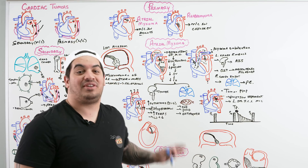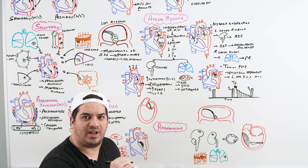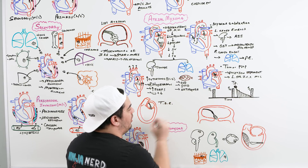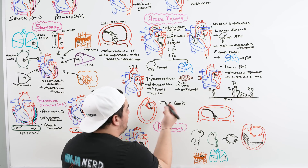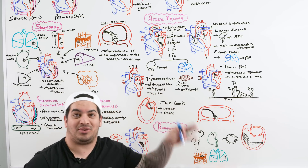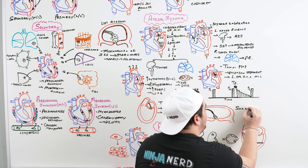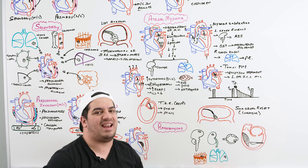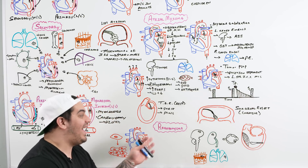To diagnose atrial myxoma, get an echocardiogram. Since we're looking at the atria, a transesophageal echocardiogram (TEE) is best — it gives a better view of the atria, similar to evaluating left atrial thrombi in atrial fibrillation. Look for the stalk, the mass, and ball-valving within the atria obstructing the mitral valve orifice. Treatment is simple: surgical resection is curative. This is a benign tumor, so there's no concern for metastasis once it's resected.